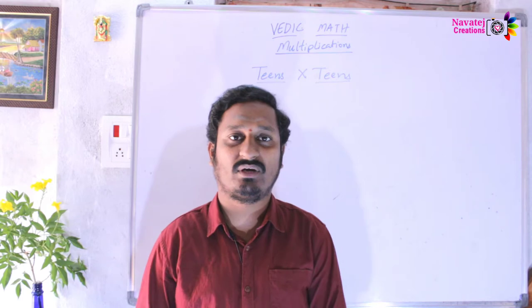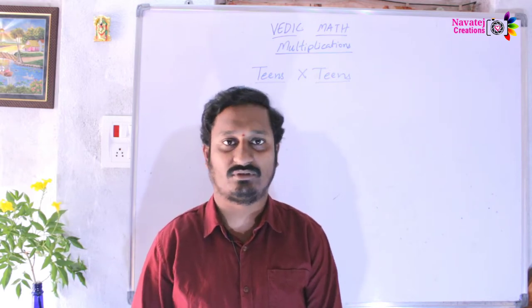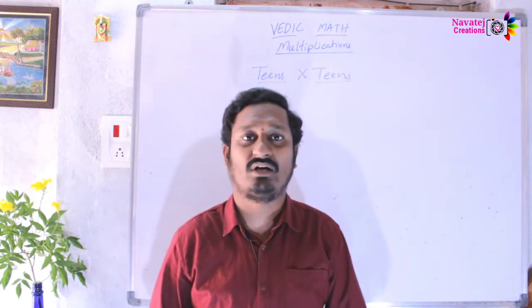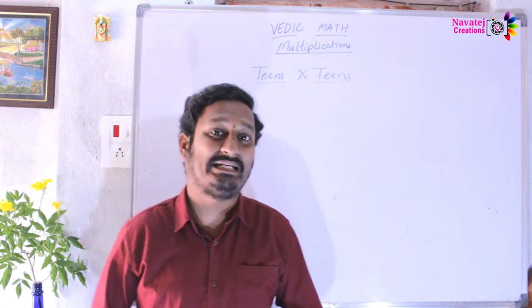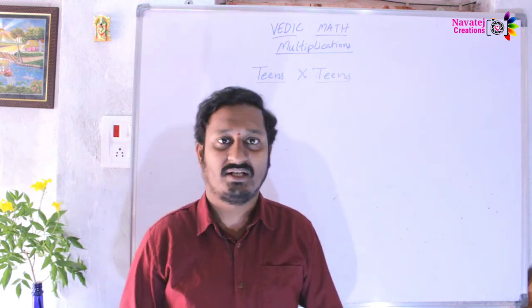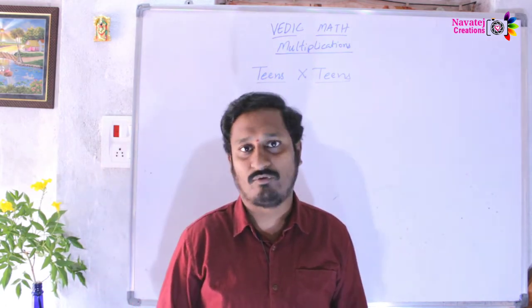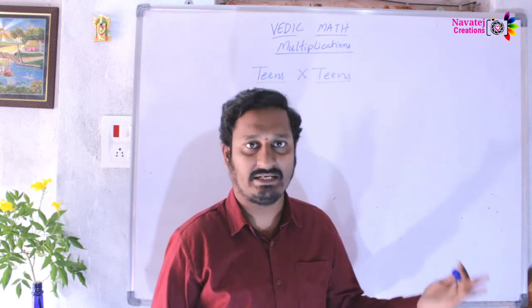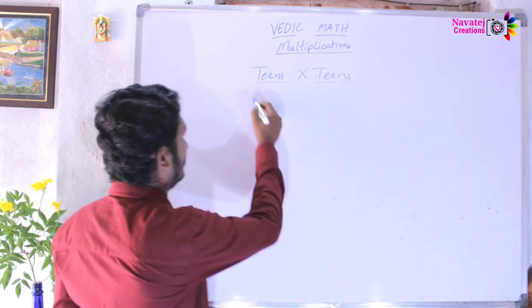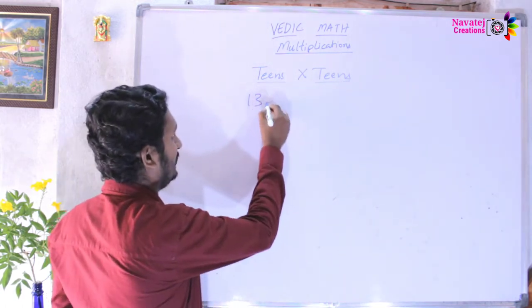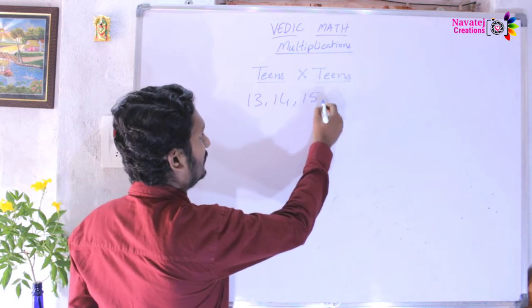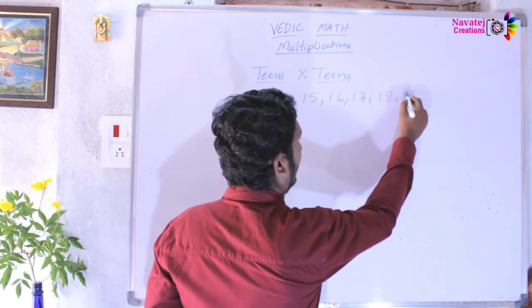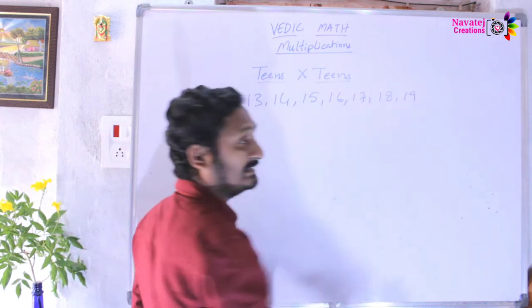In this video, we will multiply teens into teens. We will cover 13, 14, 15, 16, 17, 18, and 19. These numbers are the teen numbers.